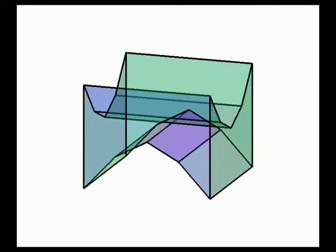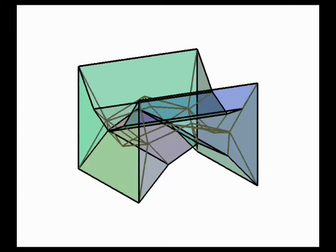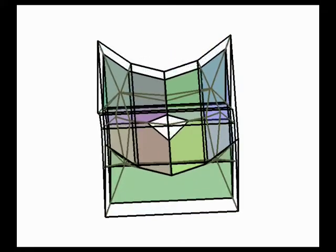Let us explore the generalization of the straight skeleton into three dimensions. The straight skeleton of a single polyhedron, which might contain holes, is the trace of all edges and vertices of the polyhedron as its faces propagate inward in the direction of their normal, at equal rate, until the polyhedron vanishes.